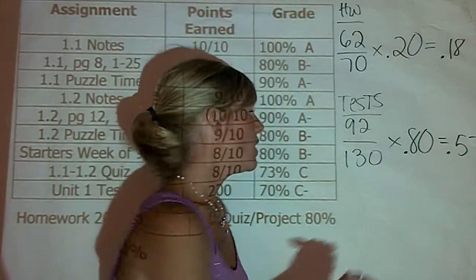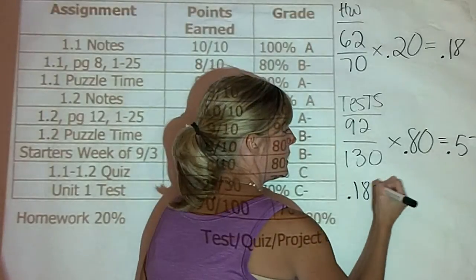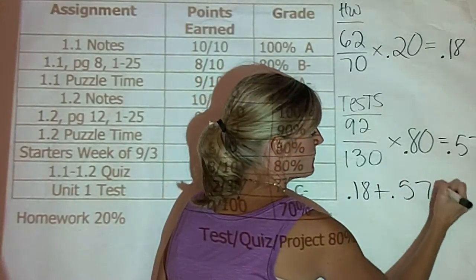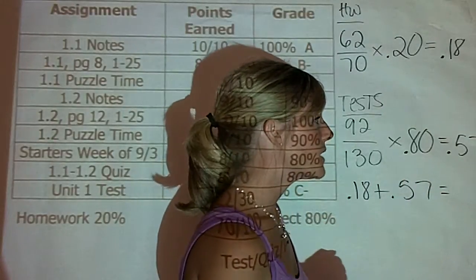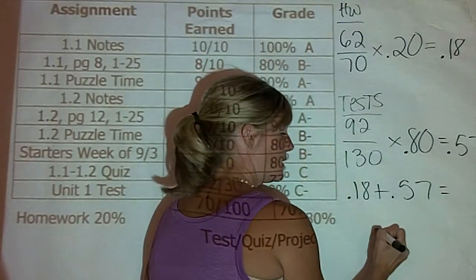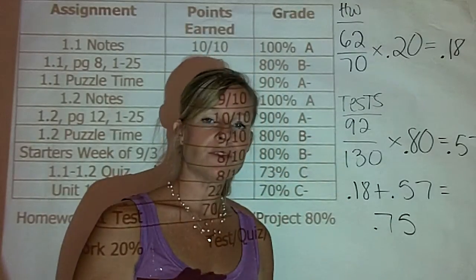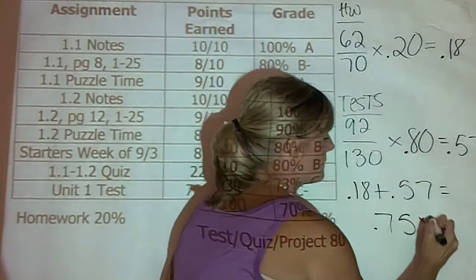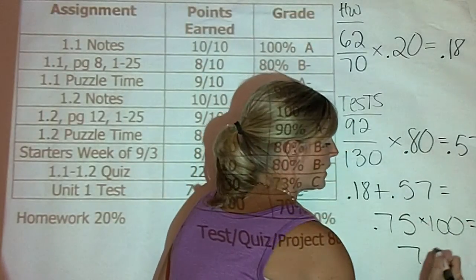To figure out their grade, all you need to do now is add those numbers together. And when you add those numbers together, you end up getting .75. To change that back into a percent, you multiply it by 100.